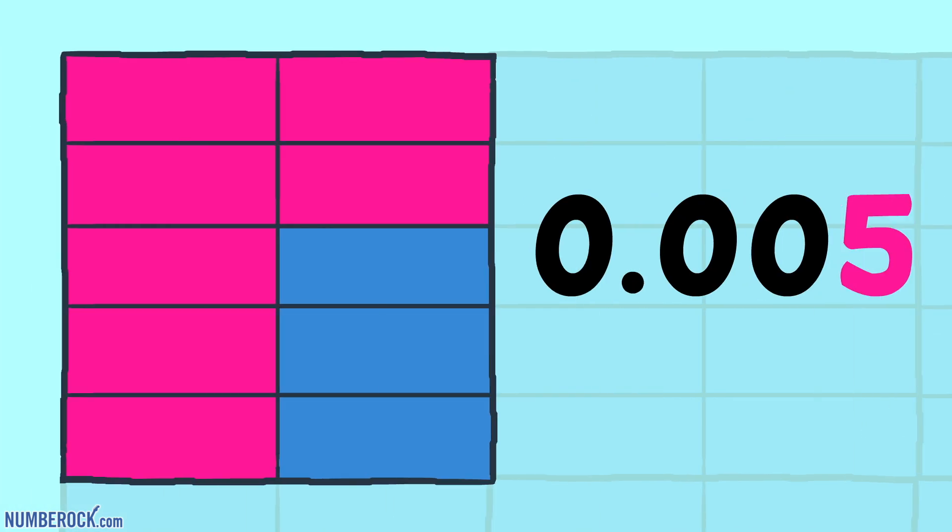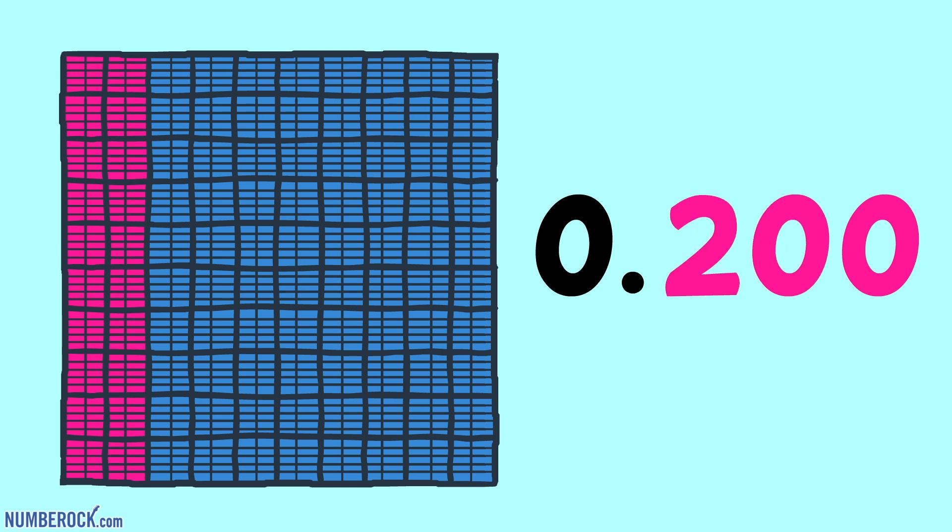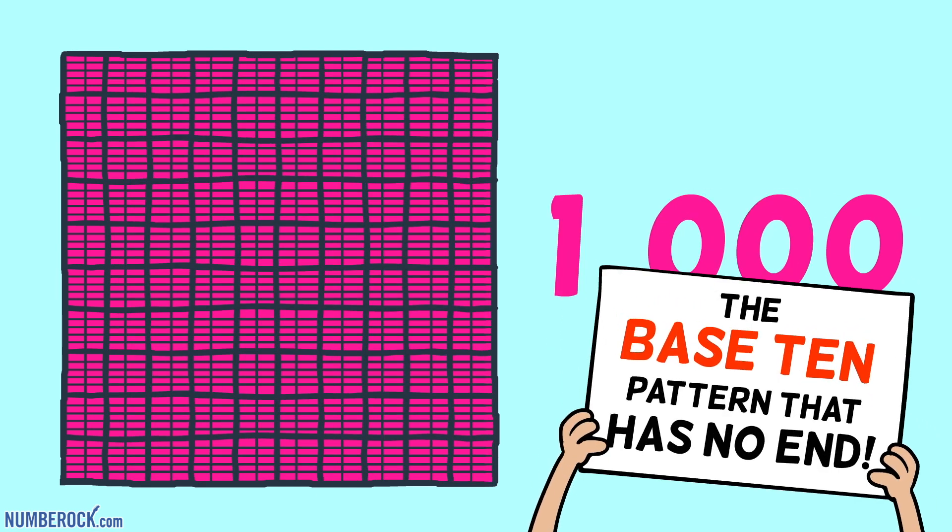So now let's review them. Ten thousandths make a hundredth. Ten hundredths make a tenth. Ten tenths make one whole. And this trend is the base ten pattern that has no end.